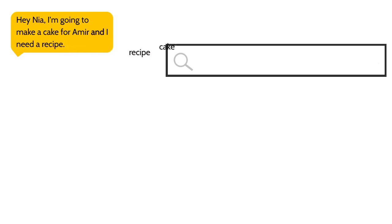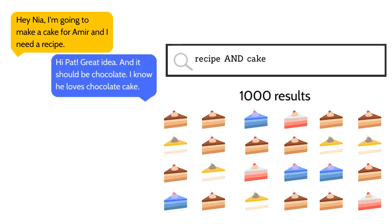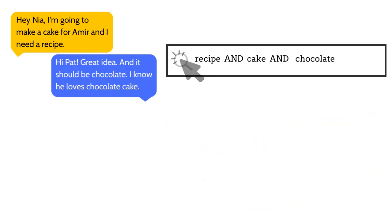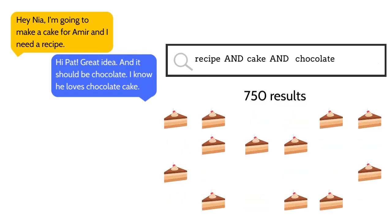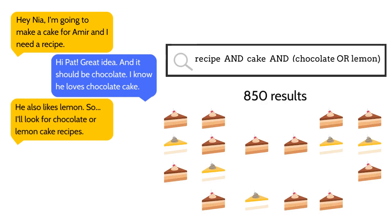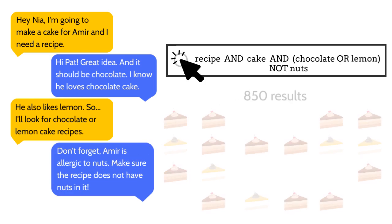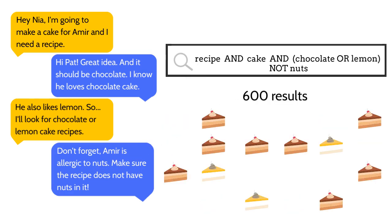Pat's keywords are cake and recipe. His Boolean operator is AND. Pat wants a recipe and it has to be for cake — he gets a thousand results. Pat wants a cake recipe and it has to be for chocolate — he gets 750 results. Pat wants a cake recipe and it can be chocolate or lemon — he gets 850 results. Pat wants a lemon or chocolate cake recipe, but it cannot have nuts — he gets 600 results.